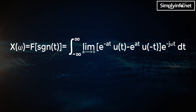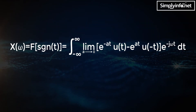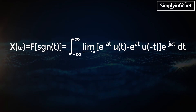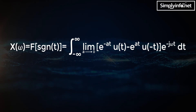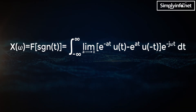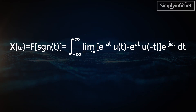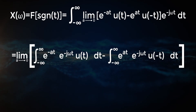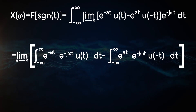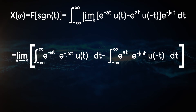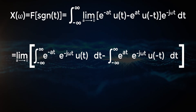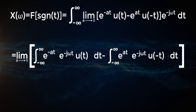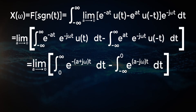X(ω) equals the integral from minus infinity to infinity of the limit as a approaches zero of [e^{-at} · u(t) minus e^{at} · u(-t)] · e^{-jωt} dt, equal to the limit as a approaches zero of the integral from minus infinity to infinity of e^{-at} · e^{-jωt} · u(t) dt minus the integral from minus infinity to infinity of e^{at} · e^{-jωt} · u(-t) dt.